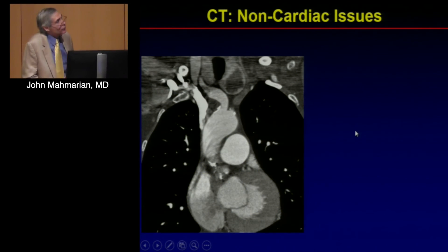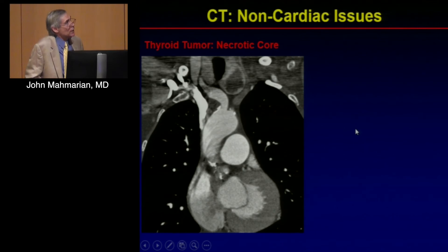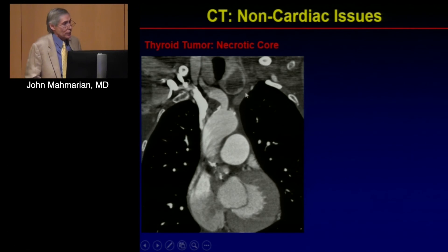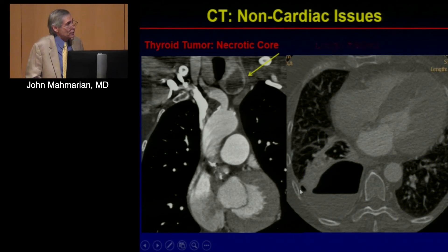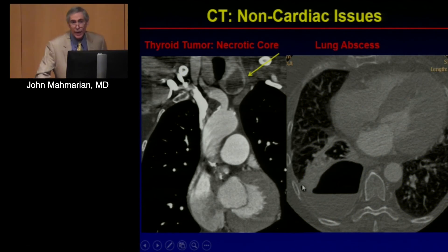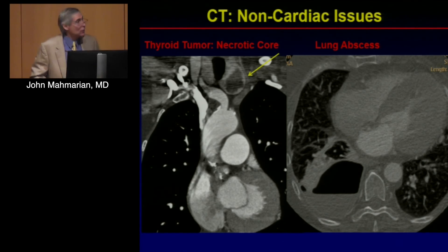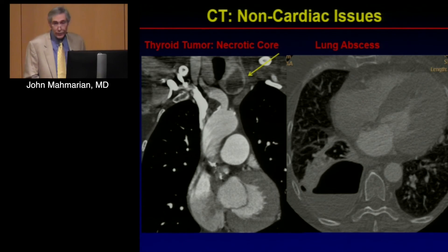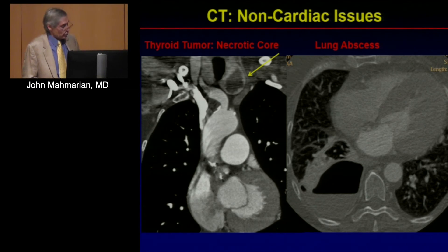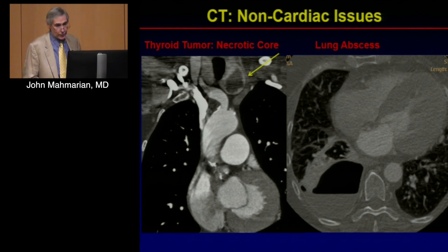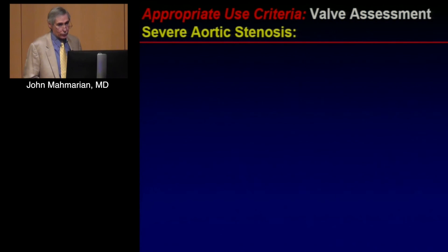CT also reveals non-cardiac incidental findings. We identified a thyroid tumor incidentally on a TAVR study, and another patient had a large lung abscess that was previously undiagnosed. We have picked up multiple malignancies in the chest and abdomen — some patients have gone on to open thoracotomy for lung tumors before proceeding with other procedures. CT picks up many abnormalities in these elderly patients.